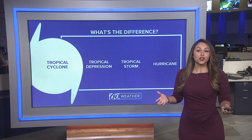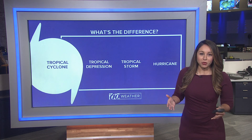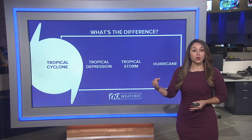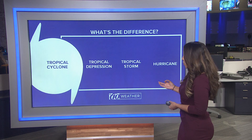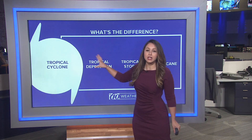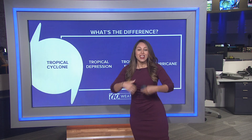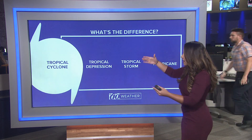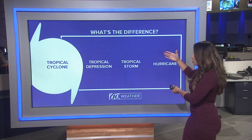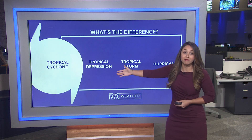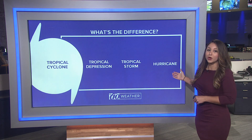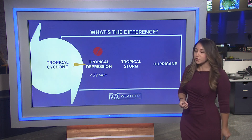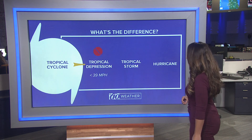You've probably heard a lot of terminology lately when it comes to the potential of a tropical cyclone forming. A tropical cyclone is a very broad term that encompasses anything between a tropical depression all the way to a hurricane. But what is the difference between each and every one?